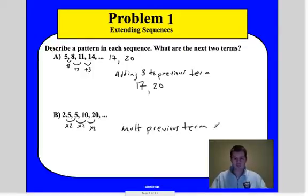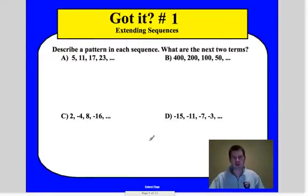So we could say multiply previous term by 2. You're just looking for that pattern that's going on. And then we want to find the next two terms. So 20 times 2, we're going to get 40. And then 40 times 2, we're going to get 80. So that would be the last two terms there. Pretty much walking through that problem is just figuring out what the pattern is, find the next terms. Got it number 1, I want you to go ahead and do this one in your notes.